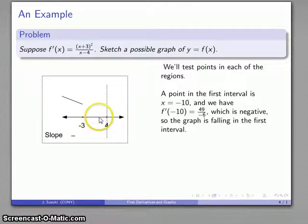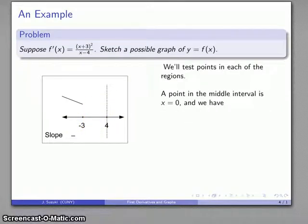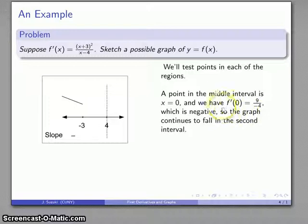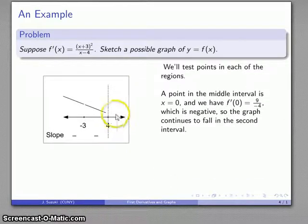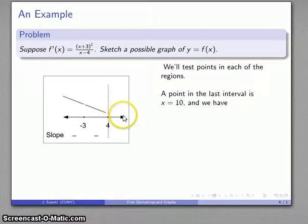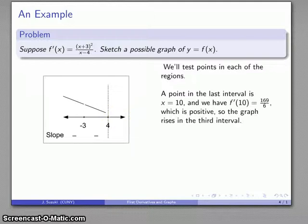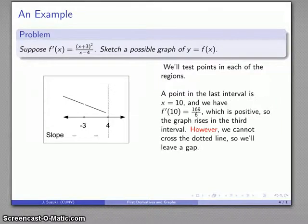In this middle interval here x = 0 is a perfectly good test point. If I substitute that into the derivative, the derivative at 0 is negative, once again our graph continues to fall. Then in our last interval here x = 10 is a perfectly good test point. We find that our derivative at 10 is 169/6, that's positive so the graph is rising in that third interval. The important thing here is I can't cross this line. This line at x = 4 is a forbidden line so we'll leave a little bit of a gap between those two.